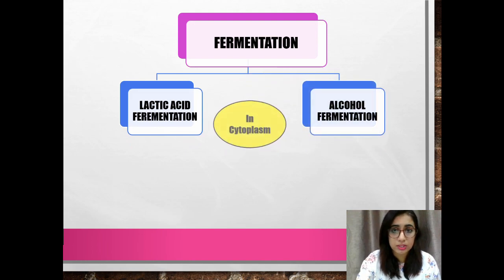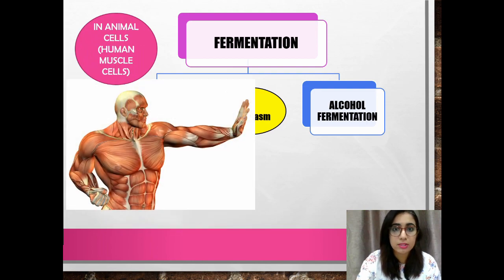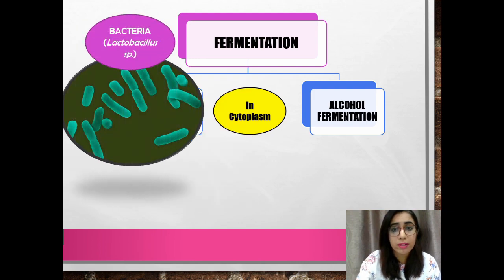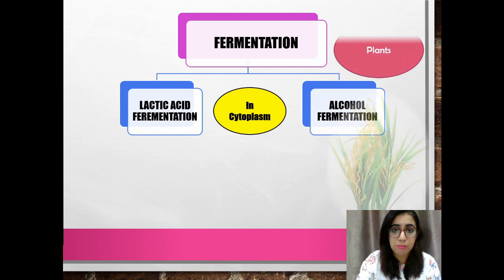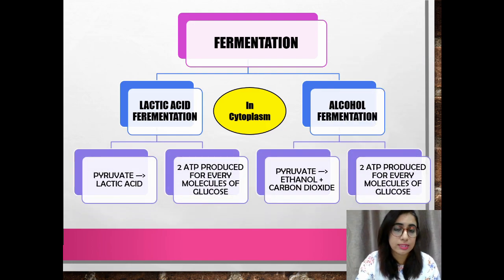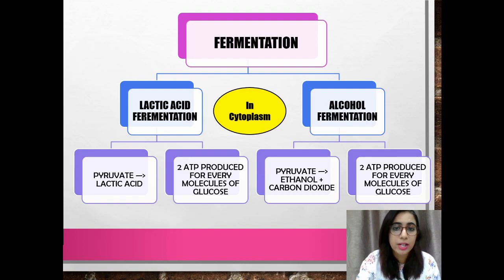Lactic acid fermentation occurs in animal cells — for example, human muscle cells — and in some bacteria such as Lactobacillus. Alcohol fermentation occurs in yeast and plants, for example the paddy plant. Glucose is broken down into pyruvate through glycolysis, and in the absence of oxygen, pyruvate carries out fermentation. In lactic acid fermentation, pyruvate is broken down into lactic acid, whereas in alcohol fermentation, pyruvate is broken down into ethanol.